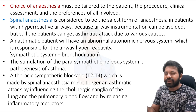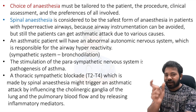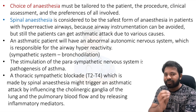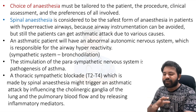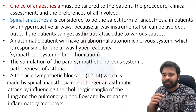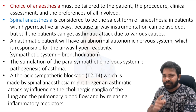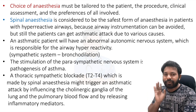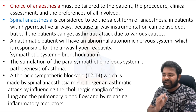An asthmatic patient will have an abnormal autonomic nervous system responsible for airway hyper-reactivity. The sympathetic system causes bronchodilation, and stimulation of the parasympathetic nervous system is implicated in the pathogenesis of asthma. A thoracic sympathetic blockade from T2 to T4 — produced by a high spinal — might trigger an asthmatic attack by influencing the cholinergic ganglia of the lung, pulmonary blood flow, and by releasing inflammatory mediators.